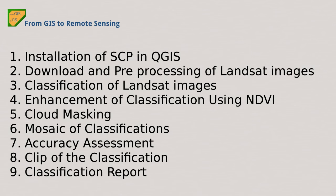Let's see a summary of this tutorial. First, we are going to install the Semi-Automatic Classification Plugin in QGIS. Then we are going to download and preprocess the Landsat images. Then we are going to classify these Landsat images and enhance the classification using the NDVI vegetation index. Then we are going to remove clouds and mosaic these classifications. And finally, we are going to perform the accuracy assessment and the classification report, calculating the area of each land cover class.